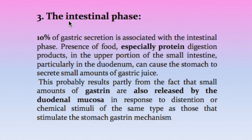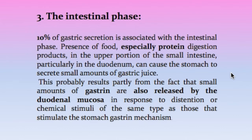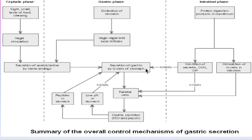The third phase is called the intestinal phase. It begins with the presence of food in the upper part of the intestine and accounts for only 10 percent of gastric secretion. The intestinal mucosa contains G cells which produce gastrin. These G cells are activated by the same mechanisms as in the stomach — either by distension or by the presence of undigested protein — and the gastrin produced is transported by the blood to the stomach to increase production of HCl and pepsin.